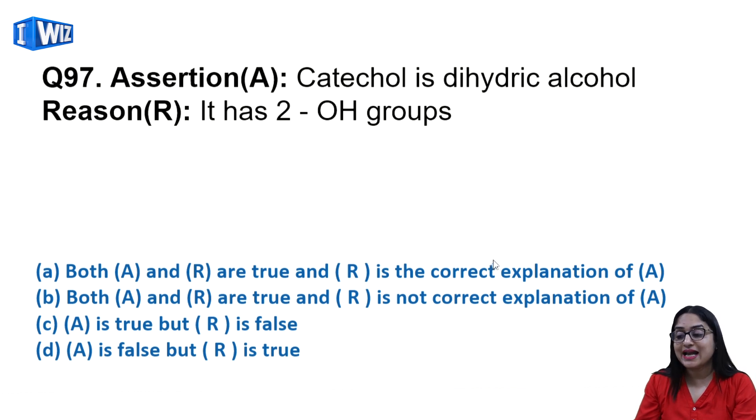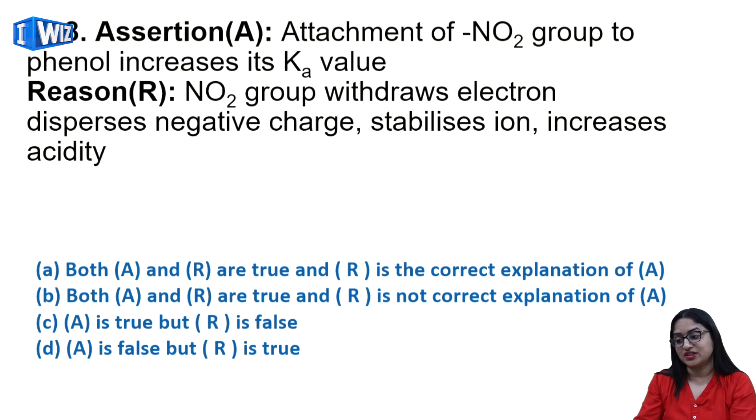Next question: catechol is dihydric alcohol and it has 2 OH groups. Yes, it is called dihydric alcohol because it has 2 OH groups. So both assertion and reason are true and reason is the correct explanation of assertion.